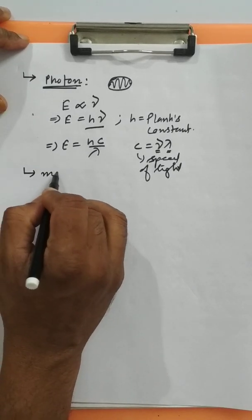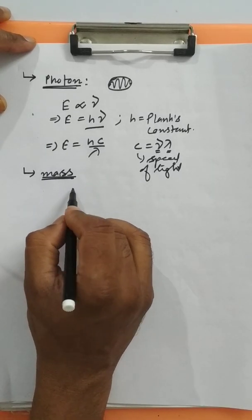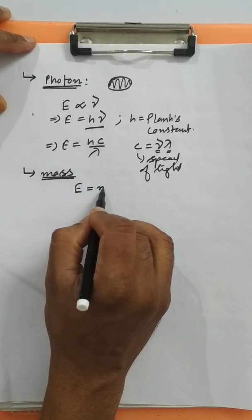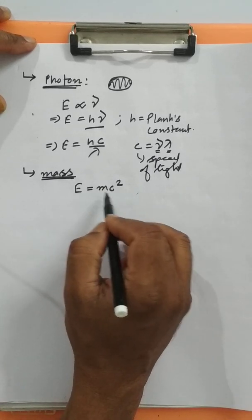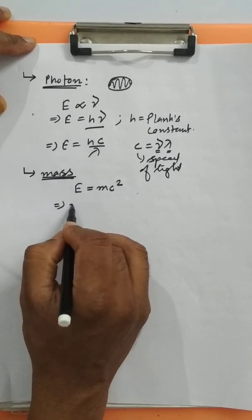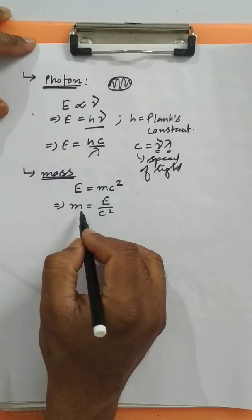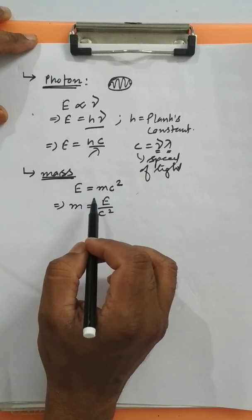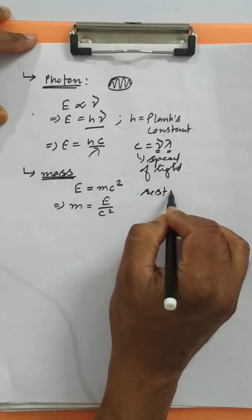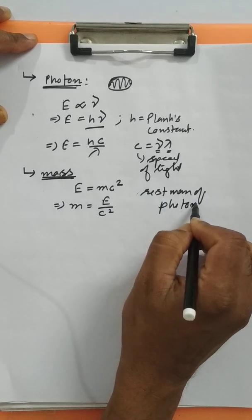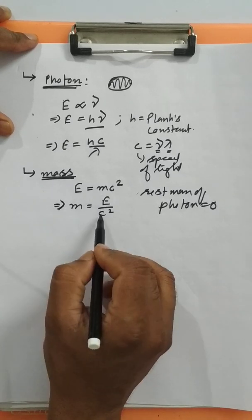Now, how much is the mass of a photon? We know about Einstein's mass-energy equivalence. The equation relating energy and mass is E equals mc squared. That means if a mass m gets annihilated, it gives rise to energy mc squared. From here, the mass m equals E divided by c squared. One important thing to understand: photon at rest does not exist.